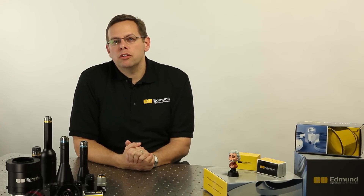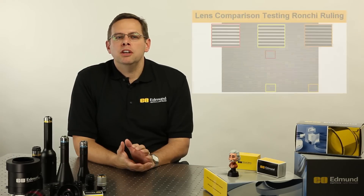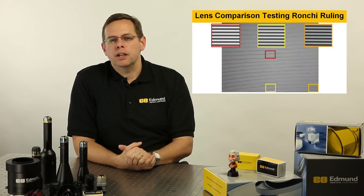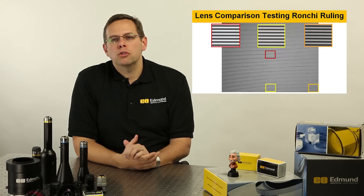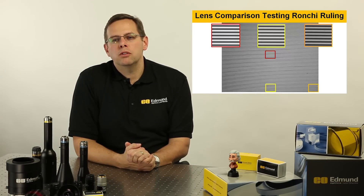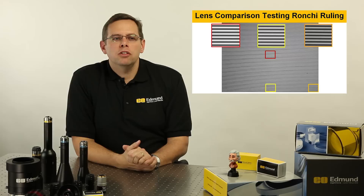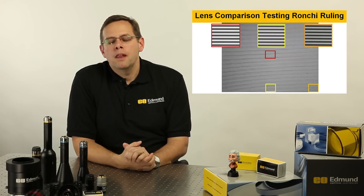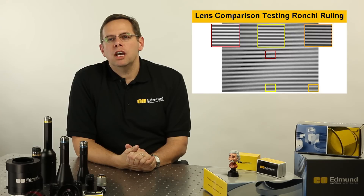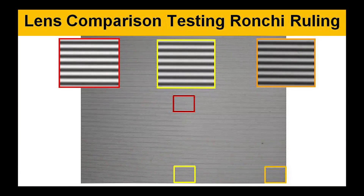In the resolution section, we looked at targets with variable frequencies. Now I want to take a more straightforward look using the same resolution across the entire field of view — using something called a Ronchi ruling. A Ronchi ruling, as you can see in the example, is a set of lines. We do close-ups of the middle, bottom edge, and corner to see how a lens responds across the full field of view at a given resolution with a specific camera.